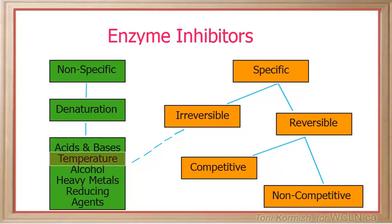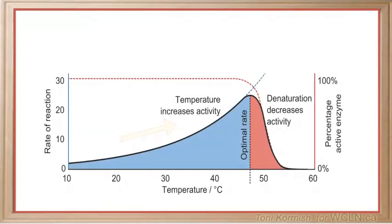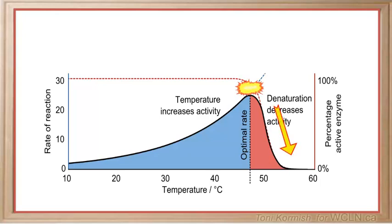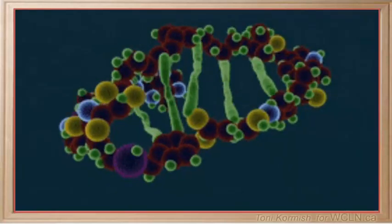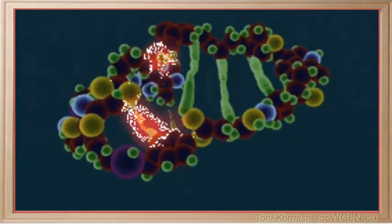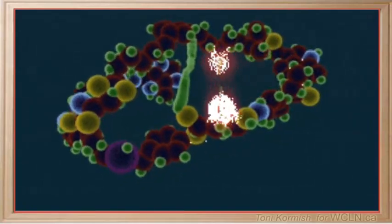An example is temperature. Usually the reaction rate of an enzyme increases with temperature, but if the temperature increase is too extreme, a point is reached when the reaction rate decreases. At high temperatures, the protein part of the enzyme begins to denature, thus inhibiting the reaction.